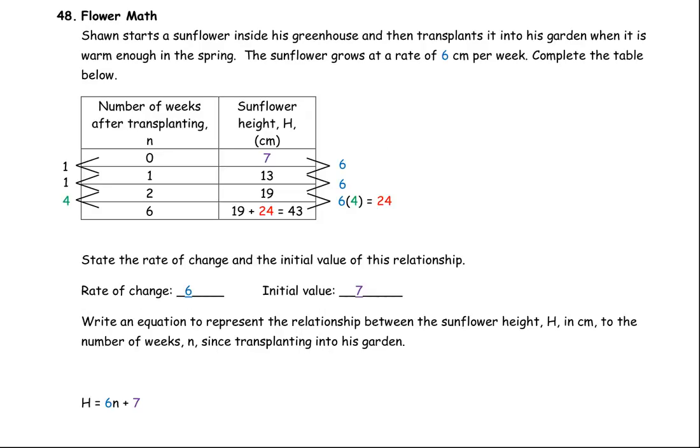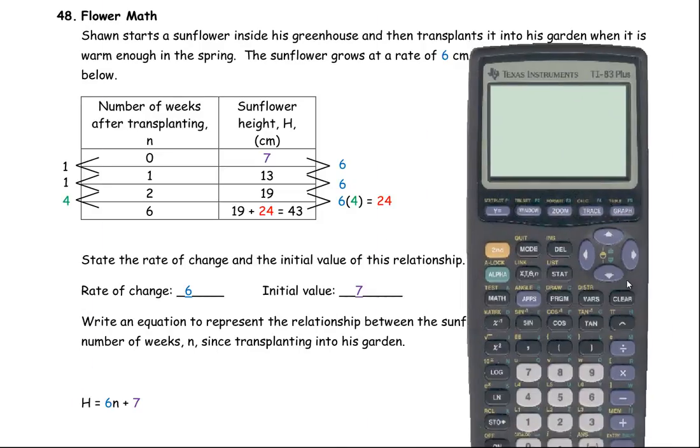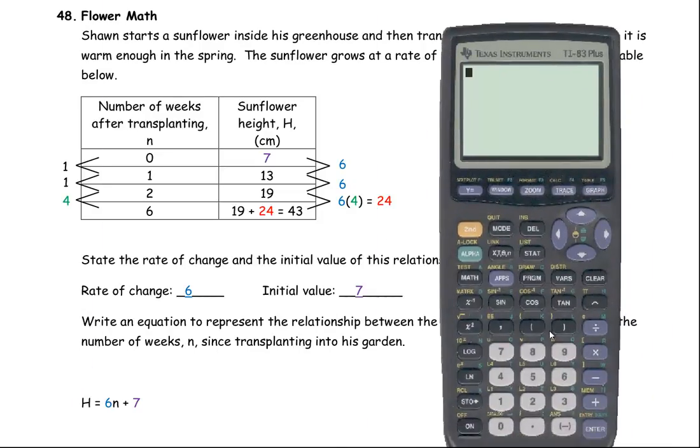Now if I wanted to take my calculator to check my numbers here and develop my equation, I've got the height is 6n plus 7. You see, the 6 gets multiplied by the number of weeks, and then you add the initial amount.